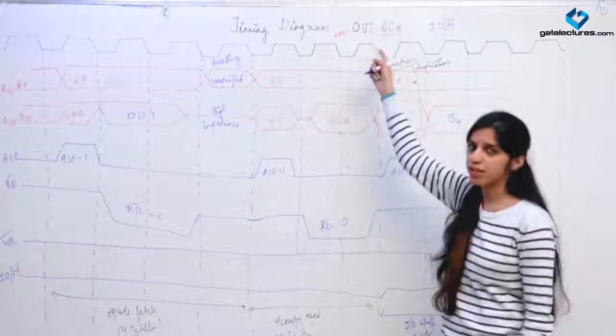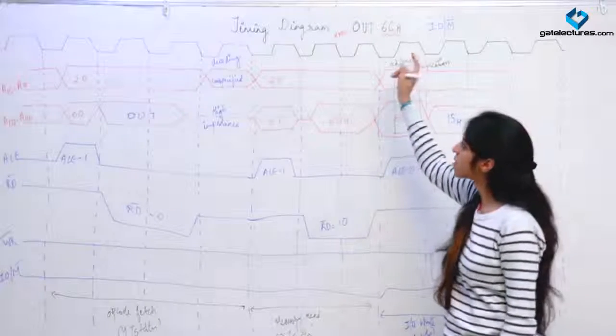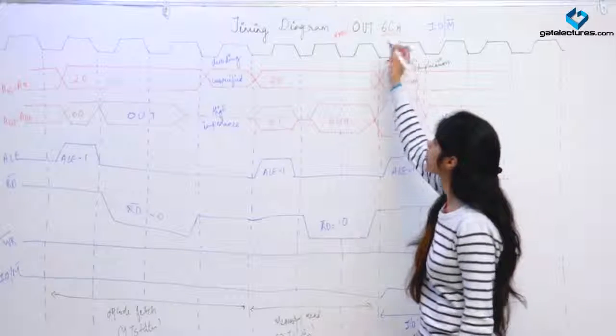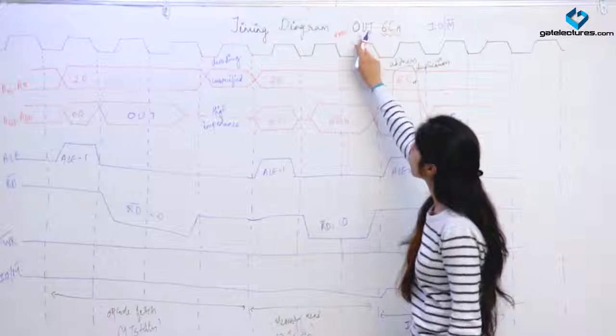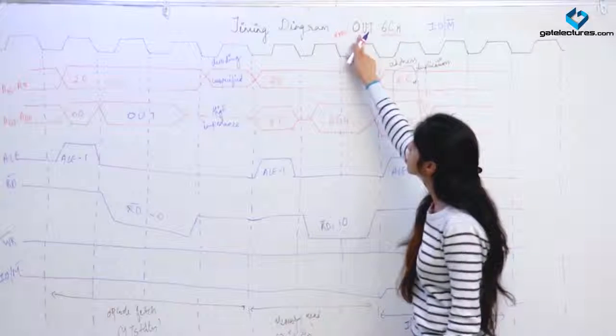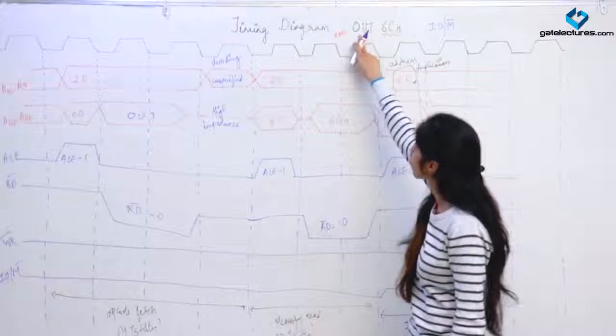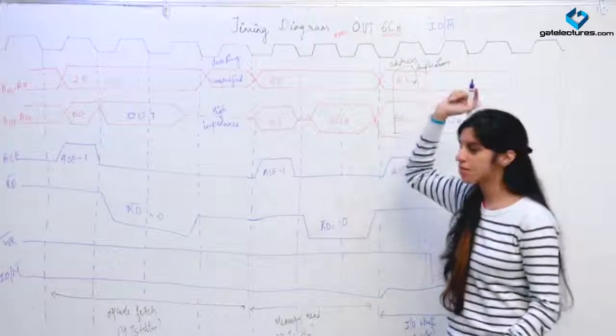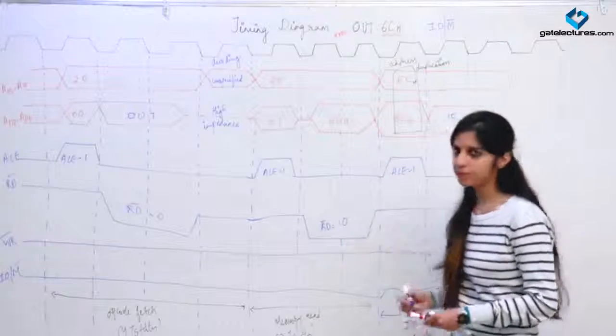So this instruction comprises 3 machine cycles: opcode fetch (4 T-states), memory read (3 T-states), and IO write (3 T-states). Totally it is going to take 10 T-states, and the size of this instruction is 2 bytes: 1 byte for the opcode and 1 byte for the address.